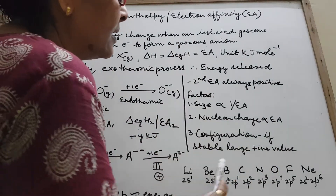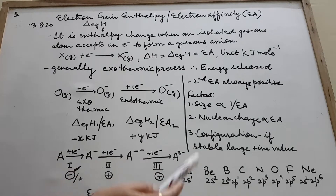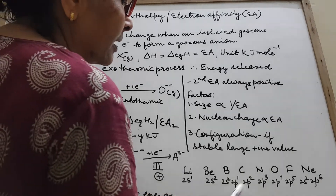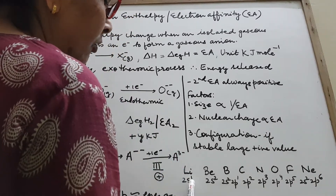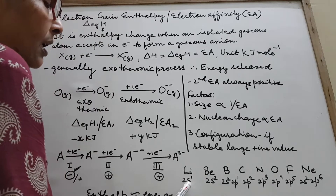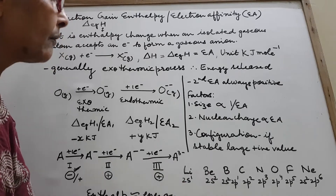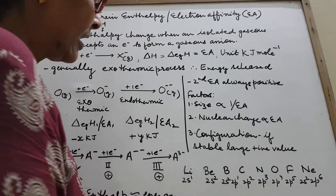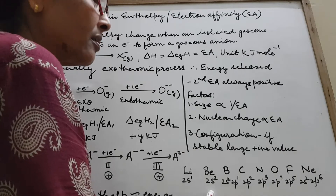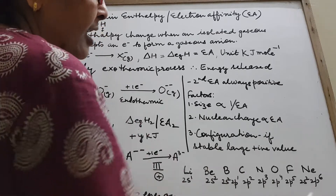The third and very important factor is electronic configuration. If the configuration is stable, the EA value is large and positive. Look at the second period — as we move across from lithium to neon, size is decreasing. Beryllium has a fully filled 2s² subshell, which is very stable. So due to this fully filled subshell, it is difficult to add an electron, and the value is positive.